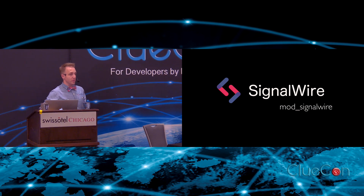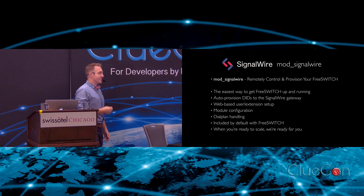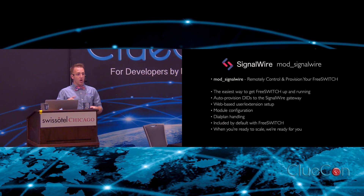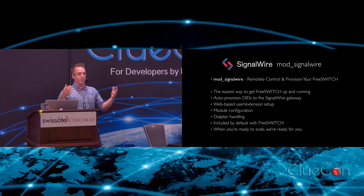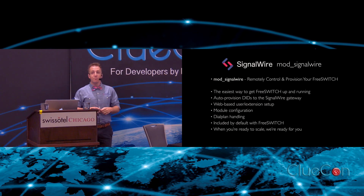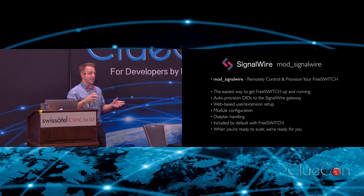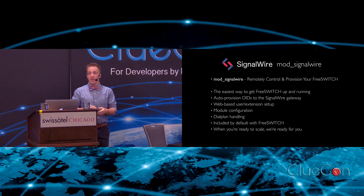The first thing we're releasing is ModSignalWire. It's a module for FreeSwitch that's going to allow you to remotely control and provision your FreeSwitch. It's going to be the easiest way to get started. It will come with the source code — you download it, put in an API key and a token, and it'll allow you to do things like buy a DID and it'll auto-provision your gateways. It'll just hook up your FreeSwitch already. There'll be a web-based interface to add dial plan users, user extension setup, and actually edit your dial plan live. Back in the 2000s, FreeSwitch revolutionized millions of dollars of vendor hardware by turning it into software and commodity hardware. Now we're trying to make it one step even easier — that was the first revolution; this is the second one.